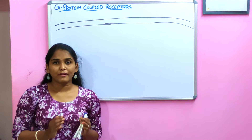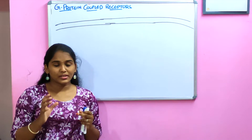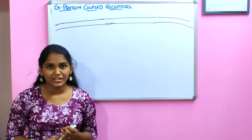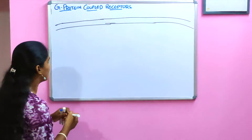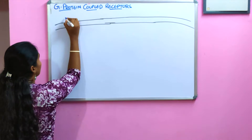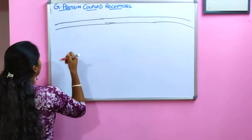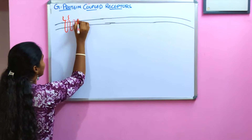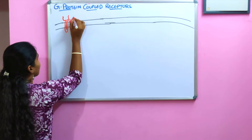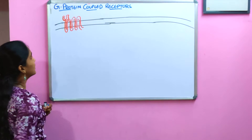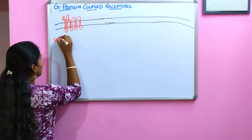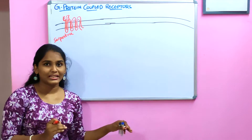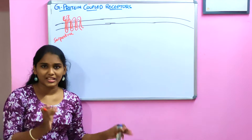Why are they called G protein coupled receptors? The G protein coupled receptors can also be called a seven helical transmembrane structure. Looking at the receptor structure: this is the cell membrane, and the receptor consists of seven helical portions. This is also called a serpentine molecule. Because it consists of seven helices, it is called a heptahelical or seven helical transmembrane structure.